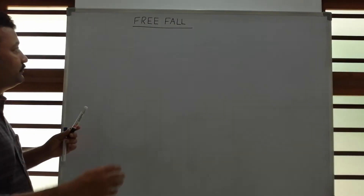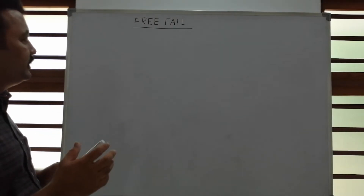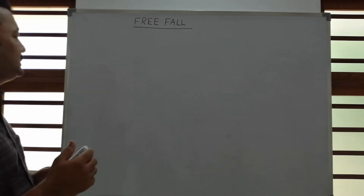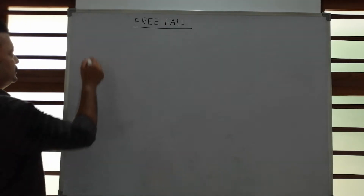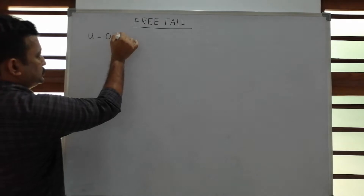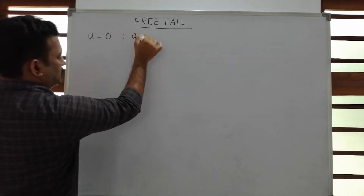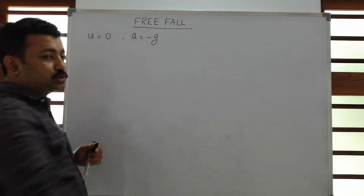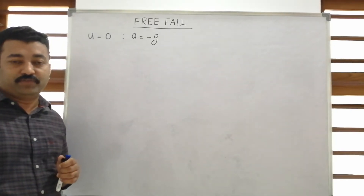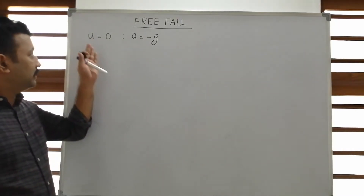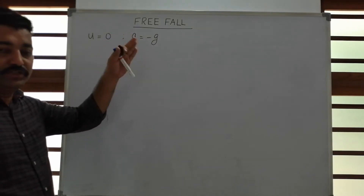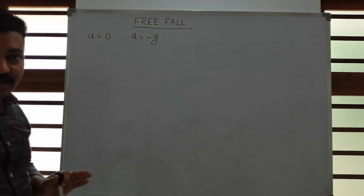I am going to discuss free fall in a very short format. What is a free fall of an object? The definition concludes into two statements: the particle undergoes free fall when its initial velocity should be zero and it experiences an acceleration equal to the acceleration due to gravity.